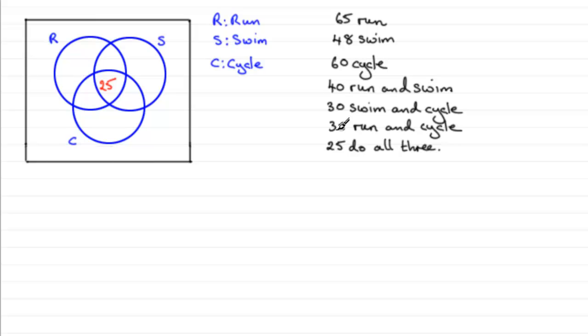Now work backwards. 35 run and cycle. So we mustn't make the mistake of putting 35 just in here. This would be the number of people who run and cycle but not swim—run and cycle only.